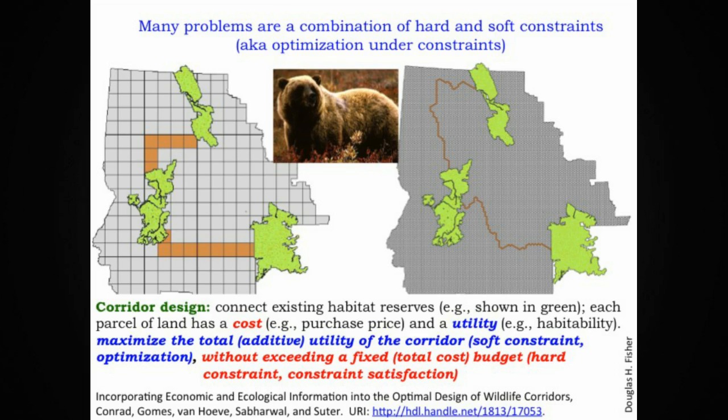Here's an interesting example of a problem that combines hard and soft constraints, also known as optimization under constraints or optimization under hard constraints. This is known as the corridor design problem. In the corridor design problem, we have existing habitat reserves for a species. In the pictures here, these habitat reserves are shown in green. And the species we're talking about in this case is the grizzly bear. What we want to do in corridor design is find a way of connecting these existing reserves in a way that, for example, minimizes the cost of having to purchase the parcels in the corridor.